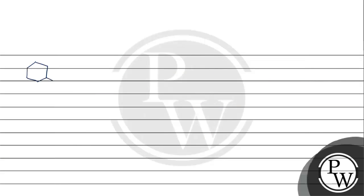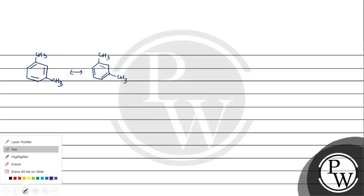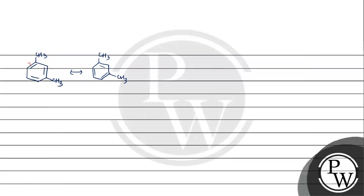Now let's talk about the question. Let's look at the question. We will start with the first option. We will identify the double bonds and save each carbon-oxygen fragment.